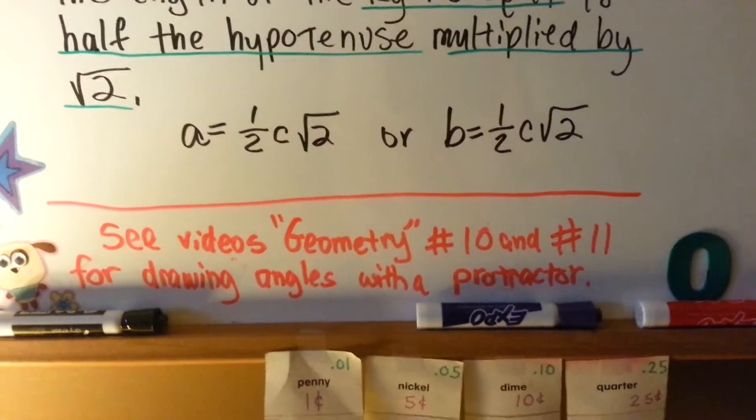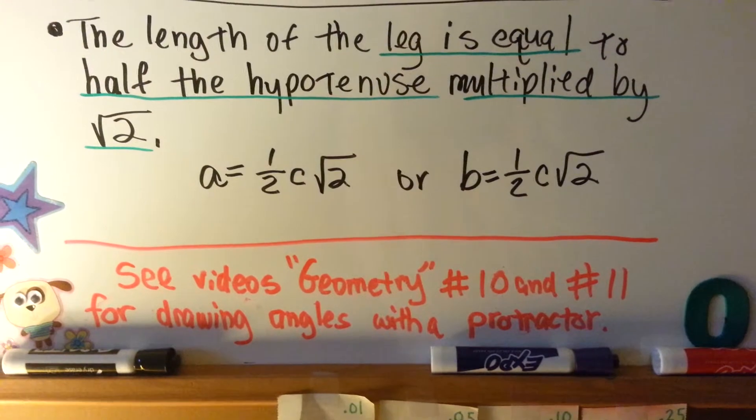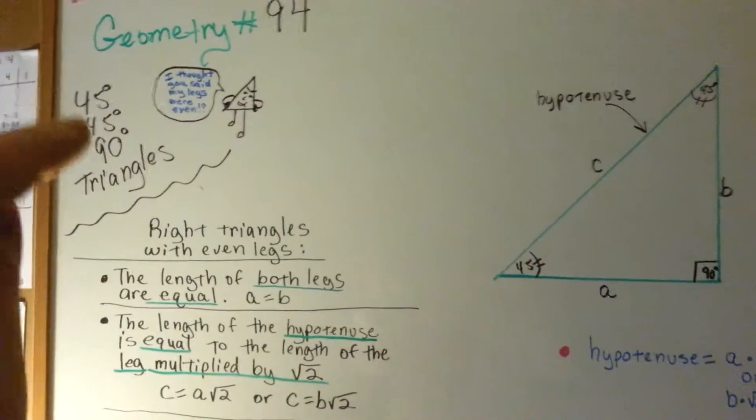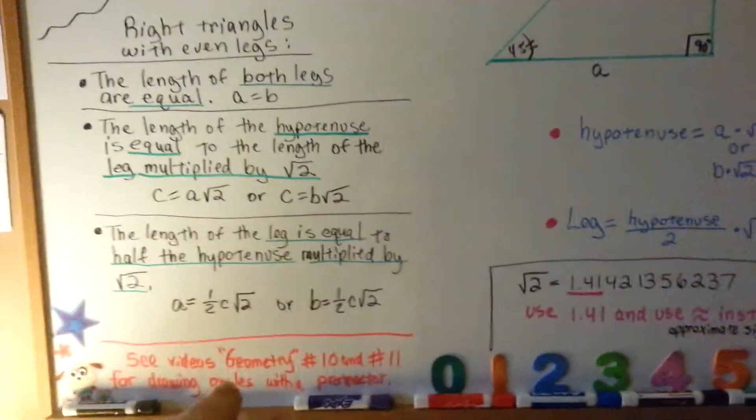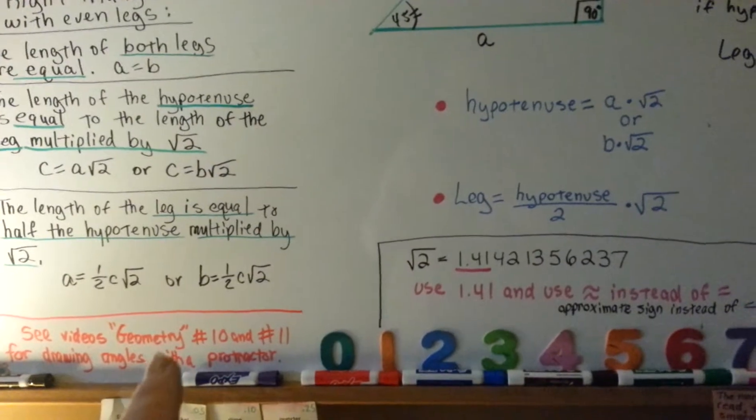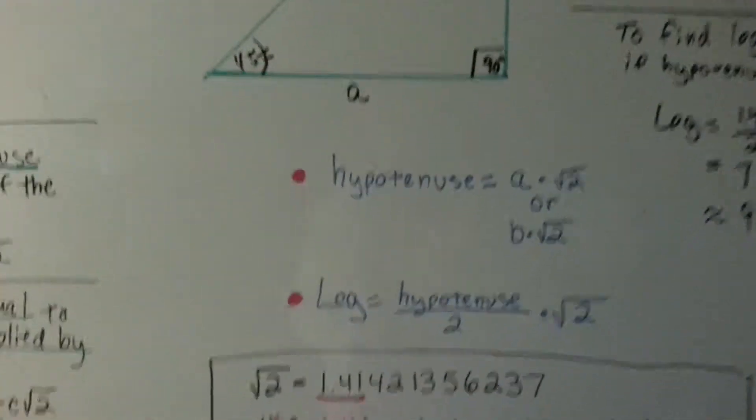So, I want you to see my geometry videos, number 10 and 11, for drawing angles with protractors. If you need to draw these, and you need to draw them at exactly 45 degrees, those two videos will show you how to do it. Not with a compass, it's with a protractor. Compass is completely different.